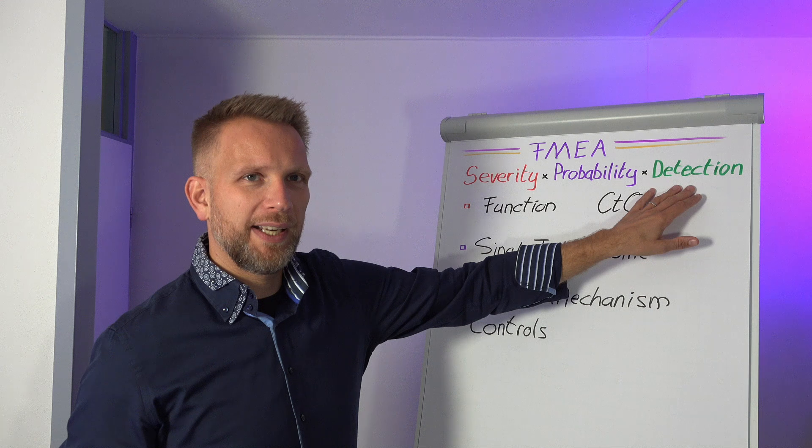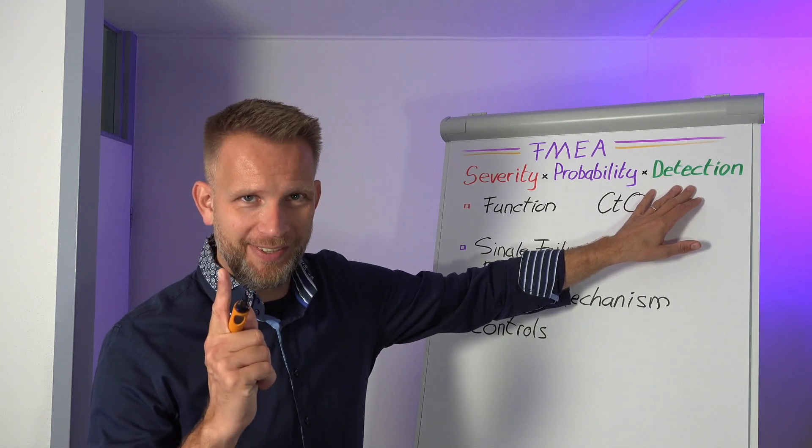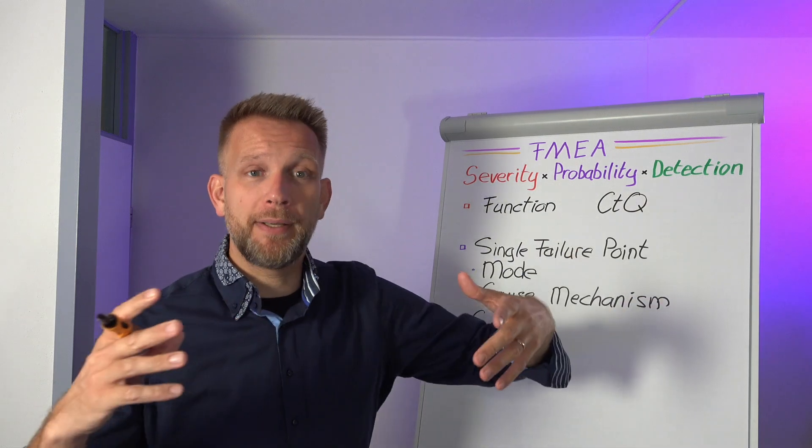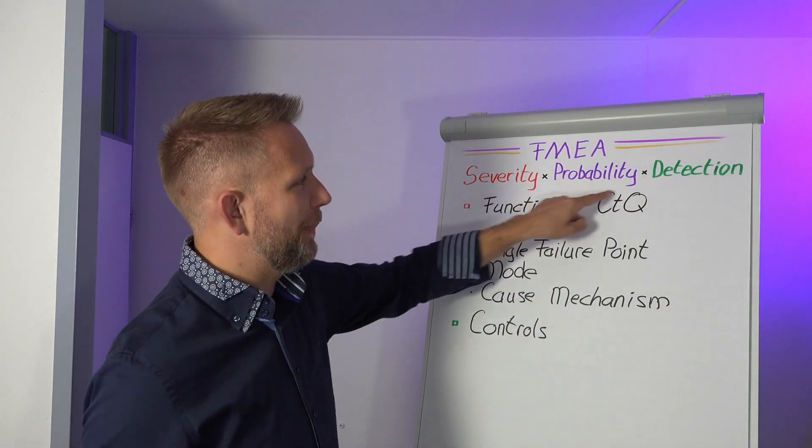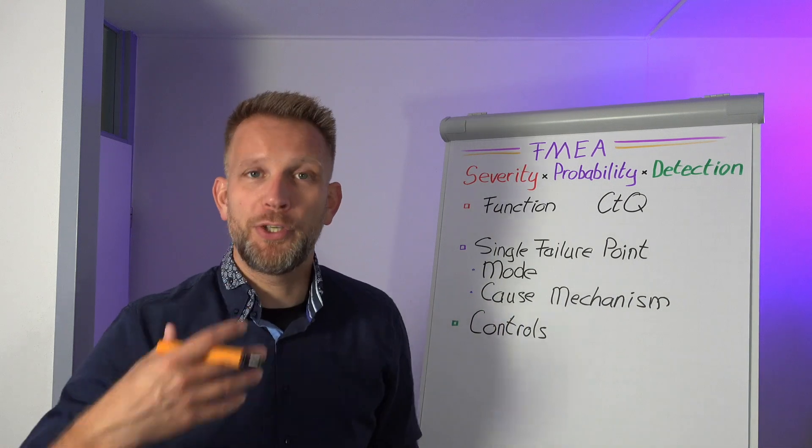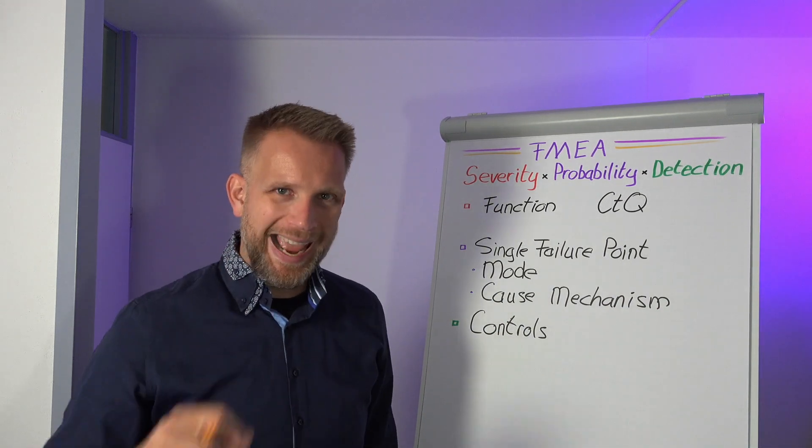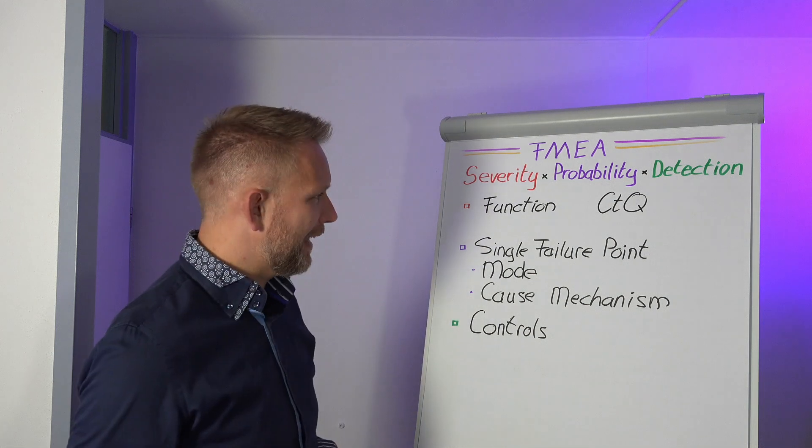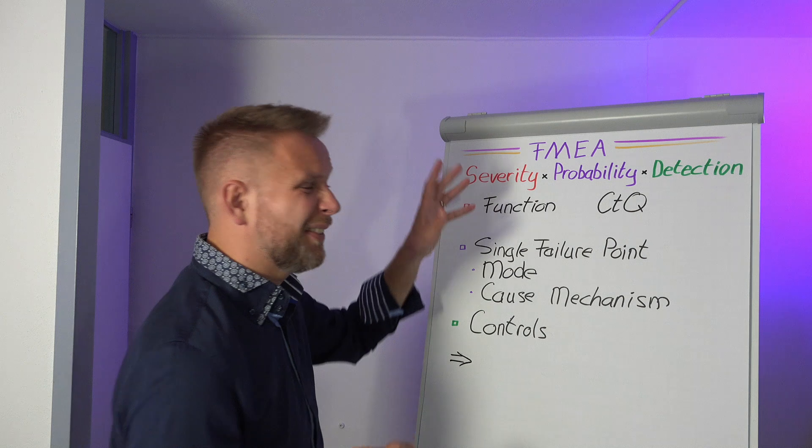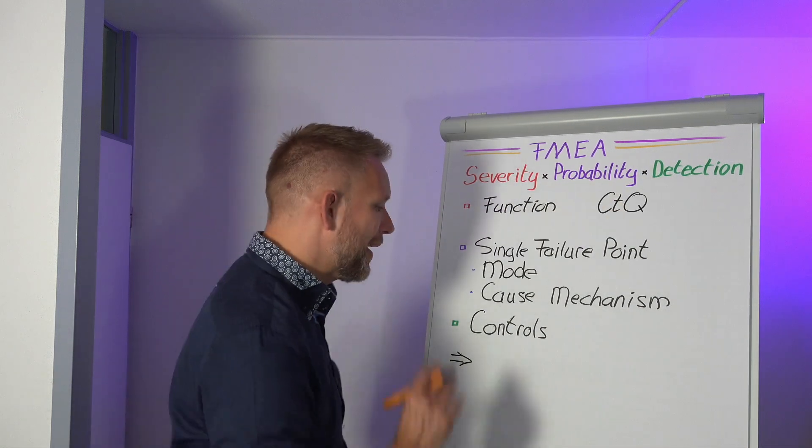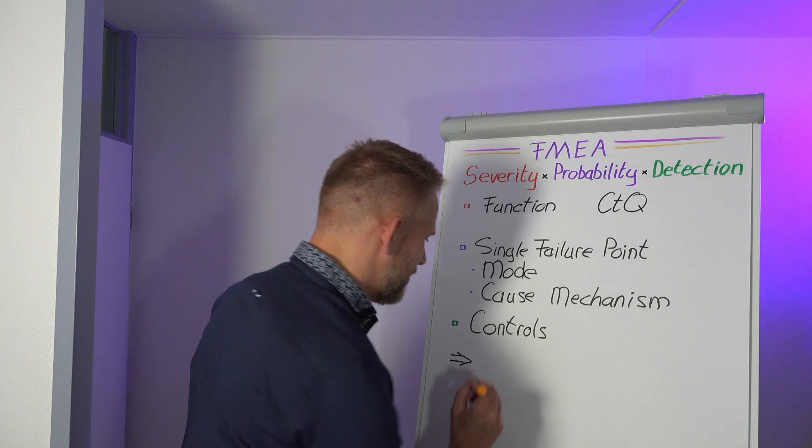Working on the detection tends to be cheaper at first because it is faster, it's easier to implement, but it does mean scrapping a lot of product. Working on the probability is the better thing, the root causes, working on the cause mechanisms. When we're looking at failure mode and effect analysis we take both of them into account, technically all three, but mainly those two. Then we also look, are there any improvements to be made.